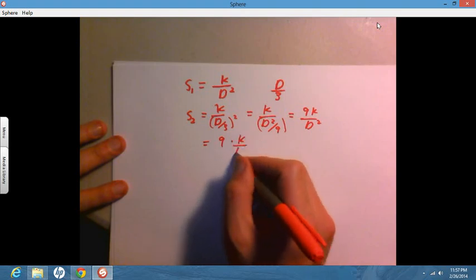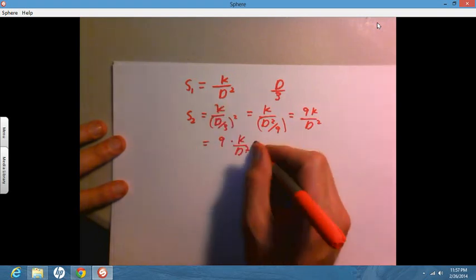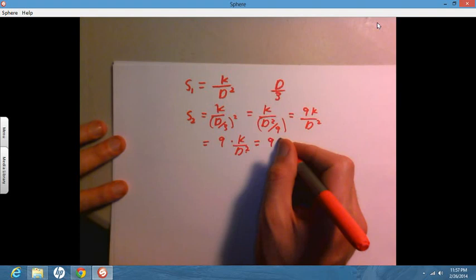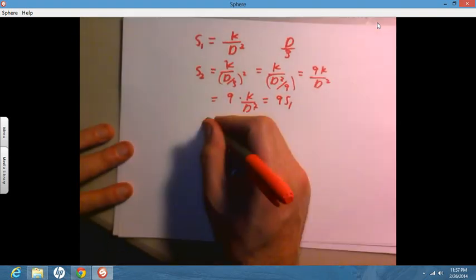What is K over D squared? That's S1. So this equals nine times S1, giving us the relationship S2 equals nine times S1.